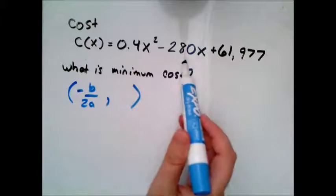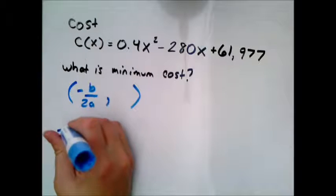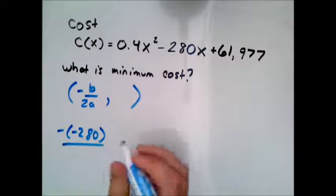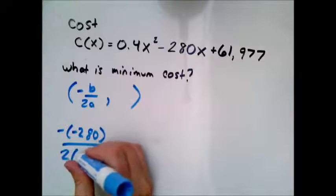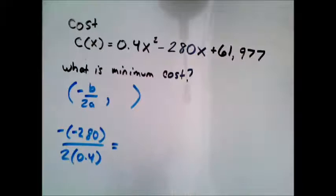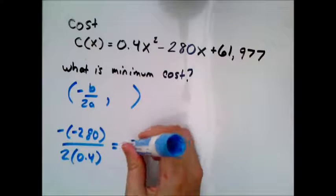And so b is negative 280. So I get negative negative 280, which notice the negatives are going to cancel. And then all over 2 times a, which is 0.4. And so 280 divided by 0.8 gives me 350.